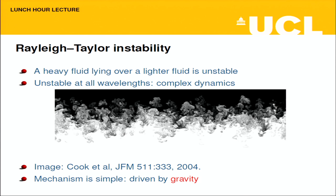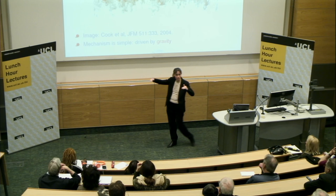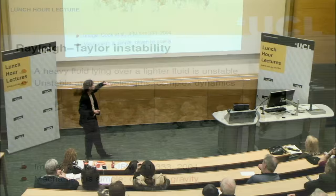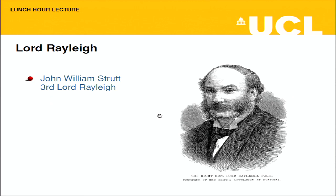The Rayleigh-Taylor instability is probably the simplest mechanism imaginable. If you put a layer of heavy stuff over a layer of light stuff, the heavy stuff wants to get to the bottom and the light stuff to the top. Any wavelength of perturbation on the interface will be unstable. You see a hugely messy complex pattern where the light white material at the bottom penetrates at every length scale into the heavy material at the top. The mechanism is simply gravity.